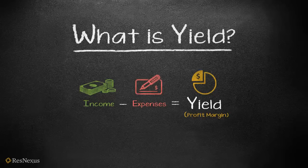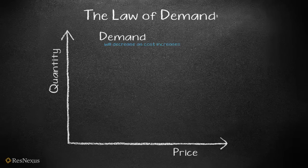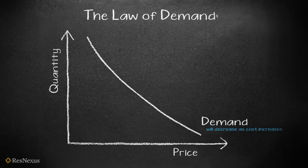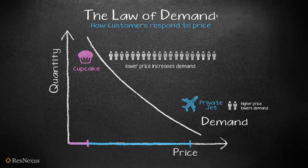Since yield management relies so much on the interaction between supply and demand, let's take a quick look at these two laws. The Law of Demand works like this: demand decreases as cost increases. The higher the price of an item, the less people will demand it, and therefore the less quantity is needed. Think private jets — not too many people are buying them because of the high price. However, if the price is lower, people can buy the item without breaking the bank. Think cupcakes. As consumer demand increases, higher quantities are needed.